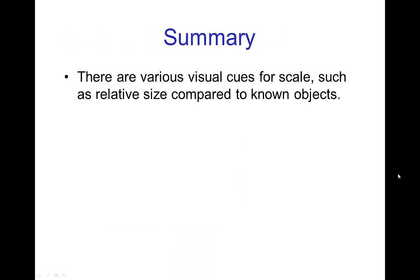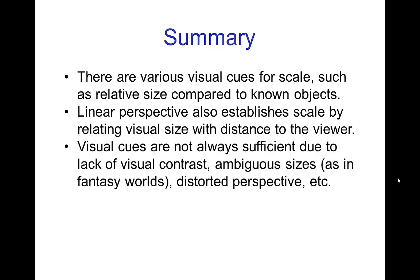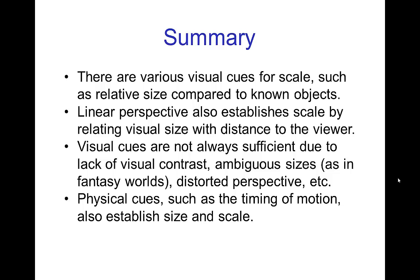In summary, there are various visual cues for scale such as relative size compared to known objects. Linear perspective also establishes scale by connecting visual size with distance to the viewer. However, visual cues are not always sufficient because of problems such as lack of visual contrast, ambiguous sizes especially in fantasy worlds, and distorted perspective. There are also physical cues that give us a sense of size and scale — some of the simplest are the timing of motion — and we'll see more of those in the next few tutorials.